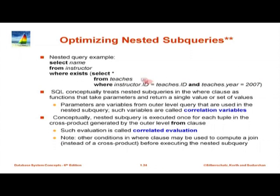This is a correlated subquery because there is a condition that uses a relation from the outer table, instructor. Instructor from outside is used inside — that is called a correlation variable. When you have such a nested subquery, the default SQL evaluation takes each instructor and evaluates the subquery with the fixed value of instructor.id, returning matching teachers tuples for that id and year 2007. The outer query checks if the result is non-empty and outputs that instructor. This is called correlated evaluation.